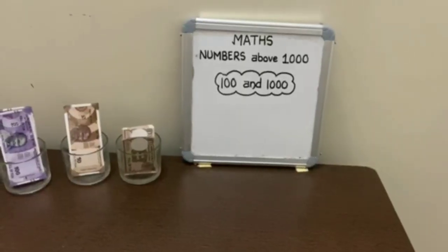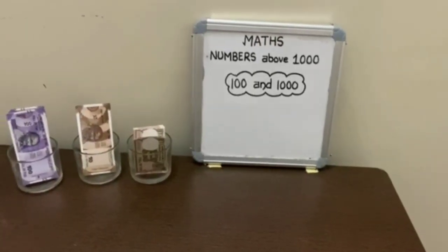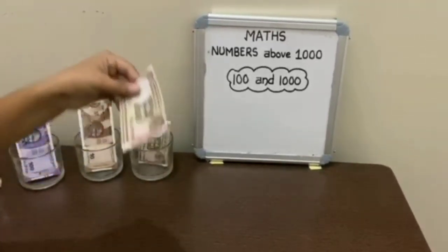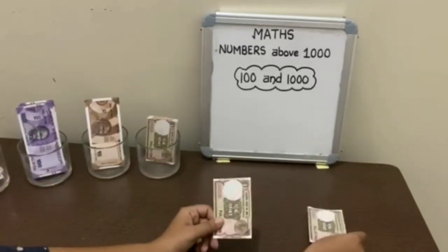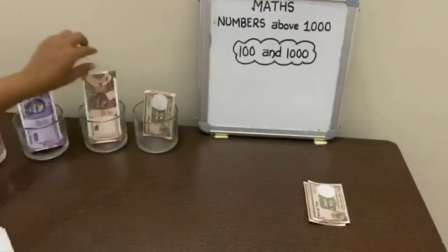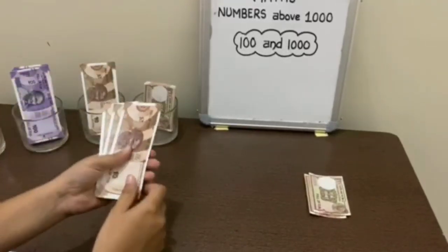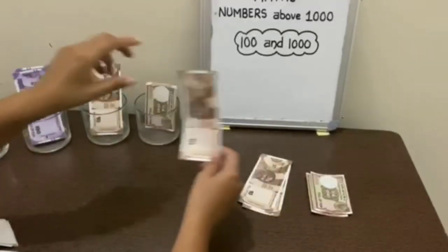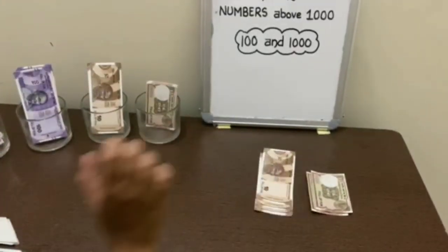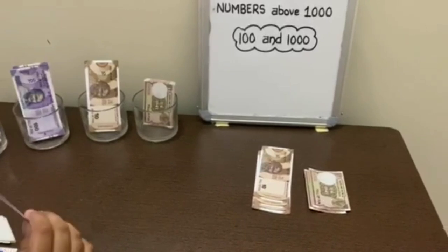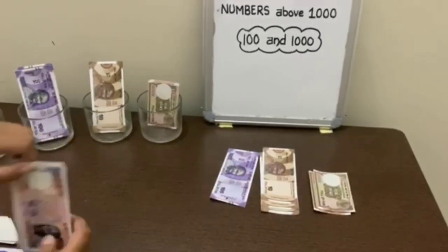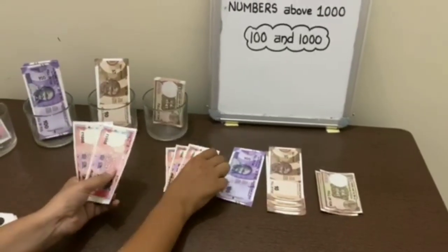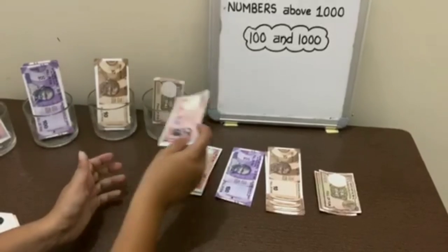Now we will make some numbers above 1000 with the help of currency notes. Here are 1 rupee notes: 1, 2, 3 and 4. Next, 100 rupee notes: 1. And at last, 1000 rupee notes: 1000, 2000, 3000, 4000 and 5000.